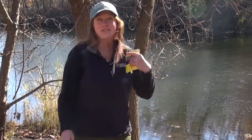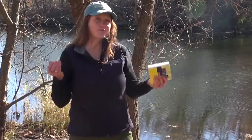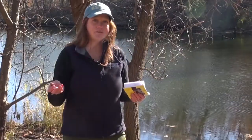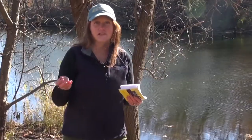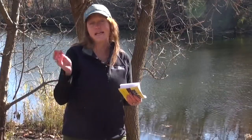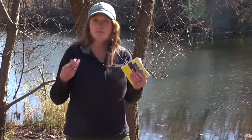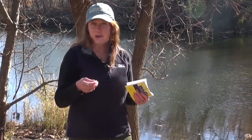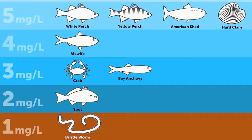Every species will have its own range of dissolved oxygen levels that it can tolerate, and that's measured in milligrams per liter. Once it gets below that range, the aquatic habitat can no longer support life.